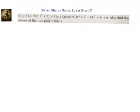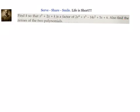Hello friends, welcome back, hearty welcome to you. Let us look at this problem: Find k so that x squared plus 2x plus k is a factor of 2x to the power of 4 plus x cubed minus 14x squared plus 5x plus 6. Also find the zeros of the two polynomials.